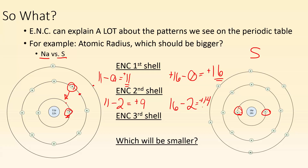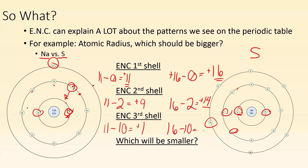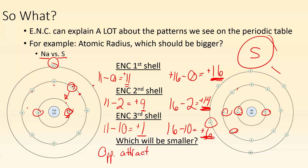Third shell for sodium: 11 minus 10 shielding electrons — experiencing an effective nuclear charge of plus 1. For sulfur: 16 protons minus 10 shielding electrons — those in the third shell are feeling a plus 6 effective nuclear charge. So which one would you expect to be smaller? Since opposites attract, and sulfur's electrons are feeling more of a pull from the nucleus than sodium's electrons are, sulfur is going to be the smaller one — all because of the effective nuclear charge.